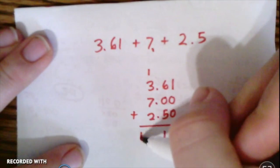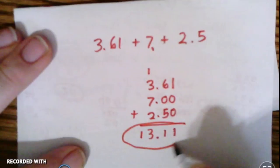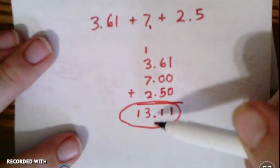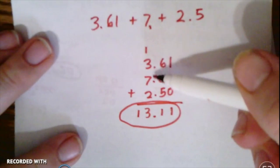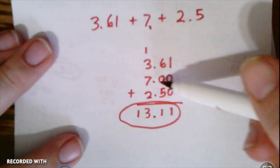Bring down my decimal, and so my answer would be 13.11. So on your problems, if there's three, you're going to line up all three numbers by their decimal place and you'll add in these zeros to give them all the same amount of decimal places or place values.